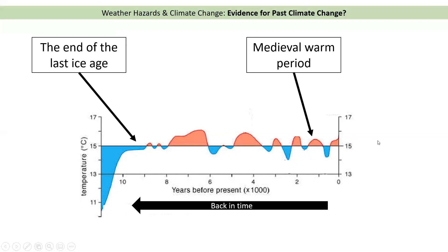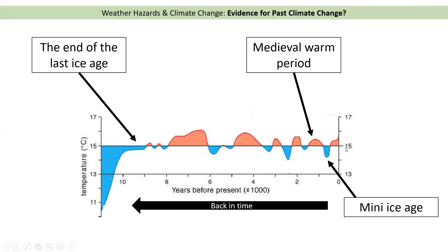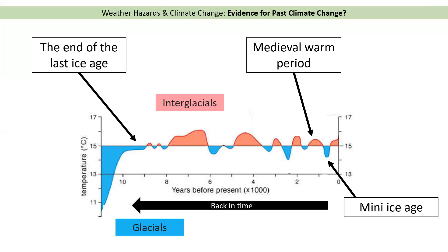At the time of the medieval warm period you could actually grow grapes in the south of England. Then we had a mini ice age, and at that time you could go ice skating on the River Thames because it used to freeze over in winter. So in the last 10–11,000 years the climate has changed quite a lot. The warmer periods are called interglacials and the colder periods are called glacials.